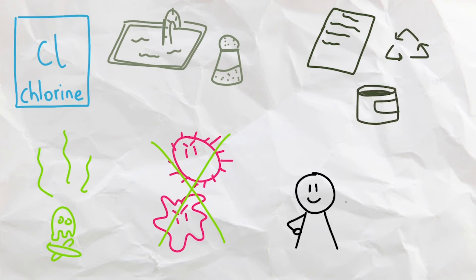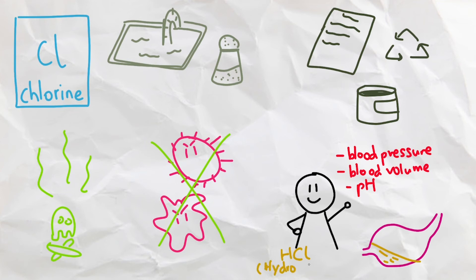Biologically, chlorine is also essential, as it helps to balance bodily fluids, keeping our blood pressure, blood volume, and pH in check. Additionally, our stomach acid also contains chlorine in the form of hydrochloric acid to help us digest food.